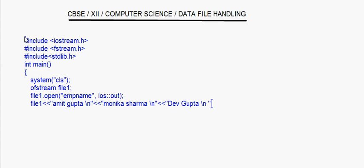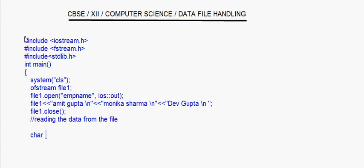I have written three names into this file. After this I want to close this file because I have already written into it. Once you have written to the file, now comes the reading part — reading the data from the file. The first thing you have to do is take one character array; I call it 'line' and I take it as 80 characters.